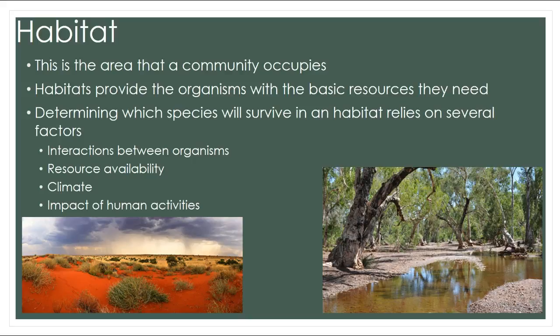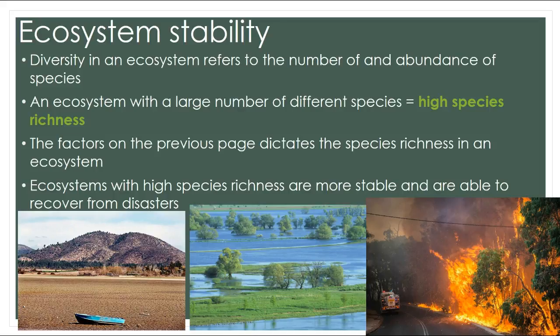Ecosystem stability relies on the number and abundance of species. An ecosystem with a large number of different species has high species richness, and tends to be more stable and able to recover from disasters like bushfires, flooding, and drought. For example, Antarctica's ecosystem is not species-rich and is therefore not a very stable ecosystem, compared to a healthy Australian bushland that has a large number of different species living in that community.